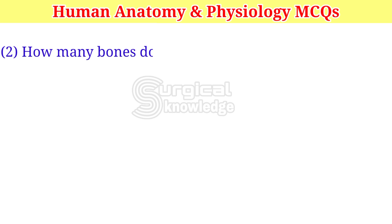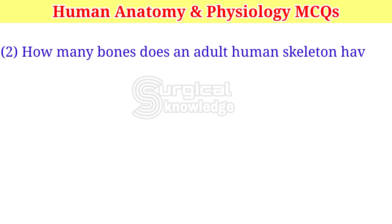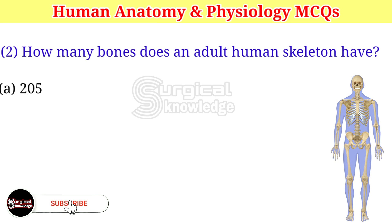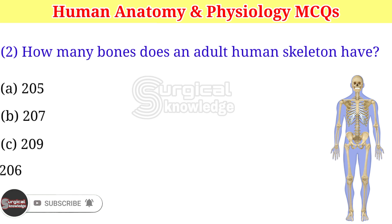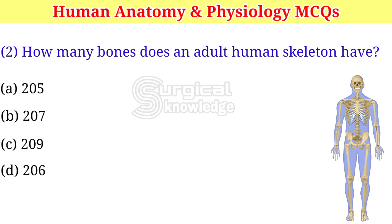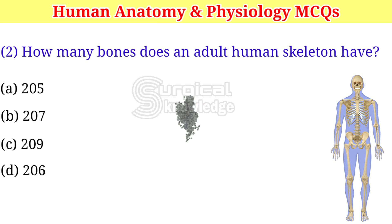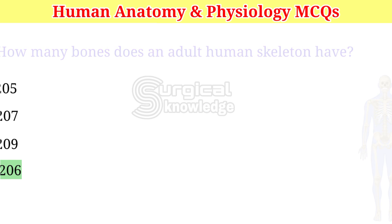How many bones does an adult human skeleton have? A. 205. B. 207. C. 209. D. 206. Right answer is 206.